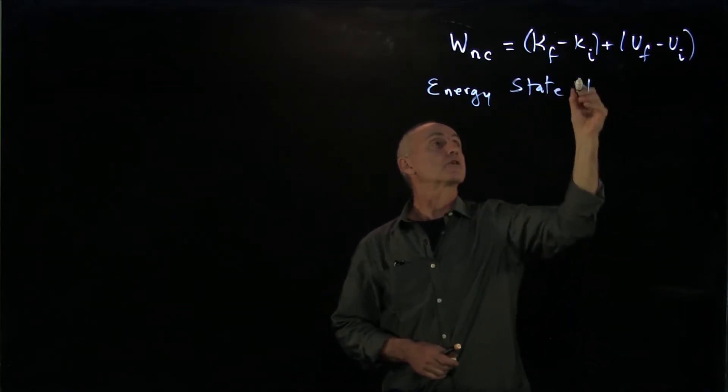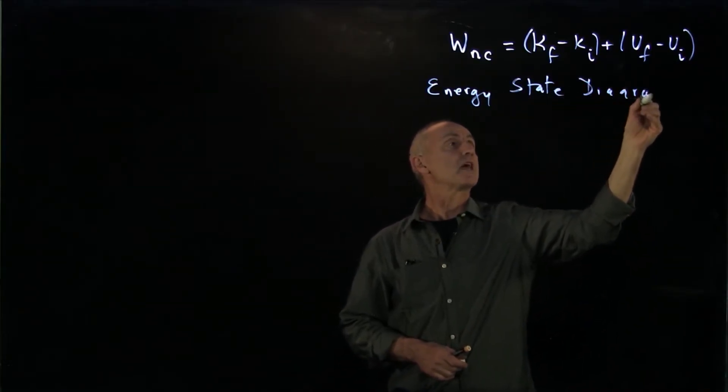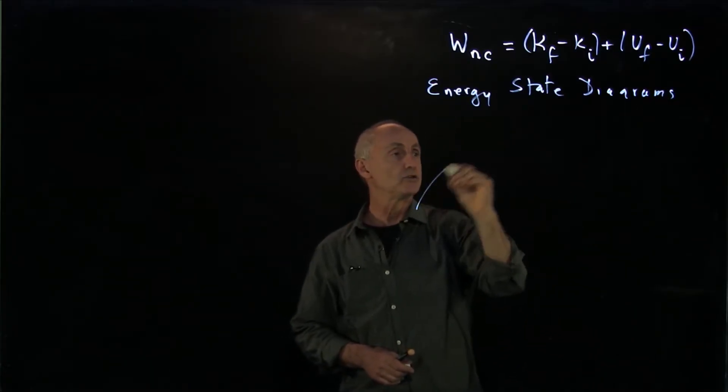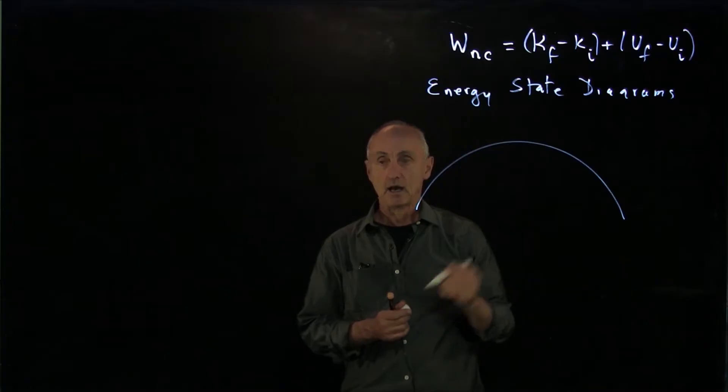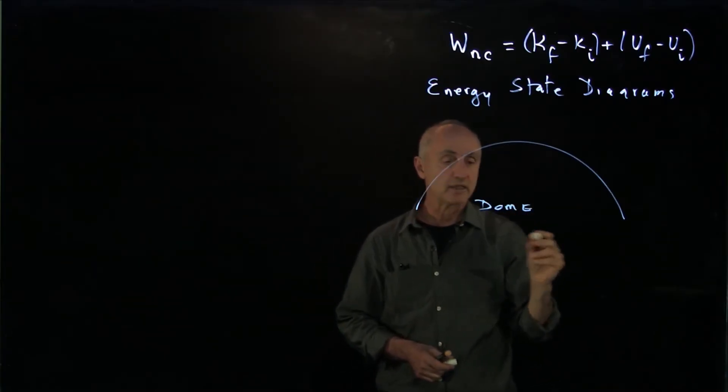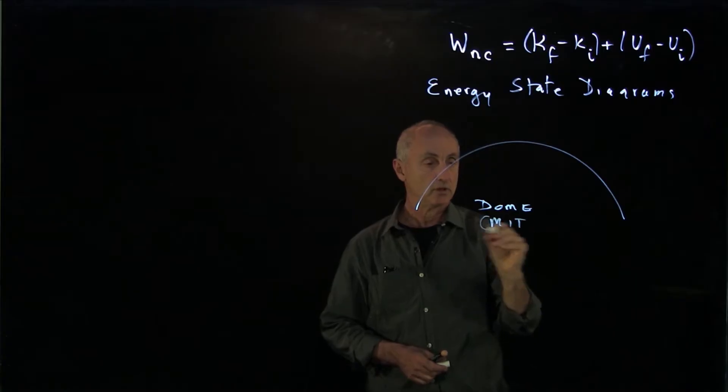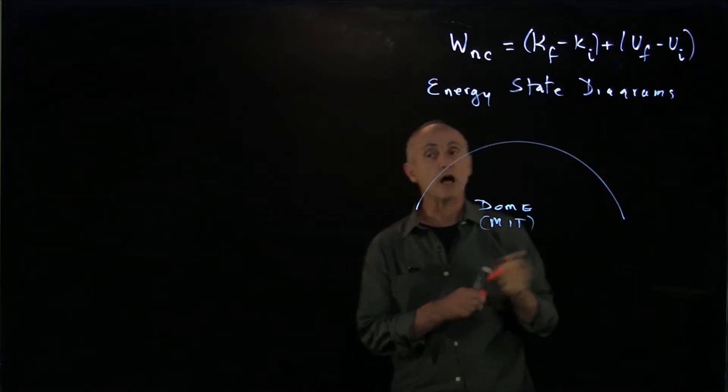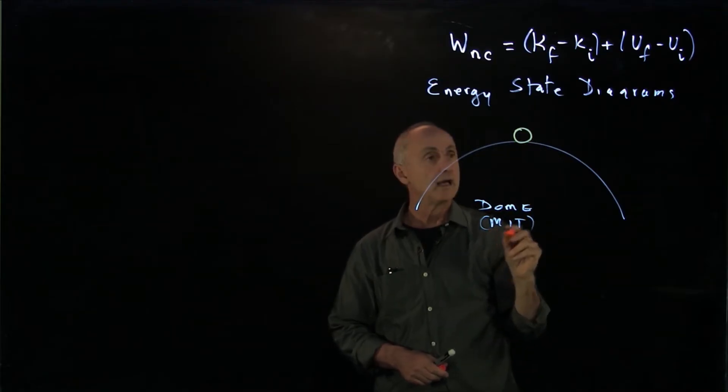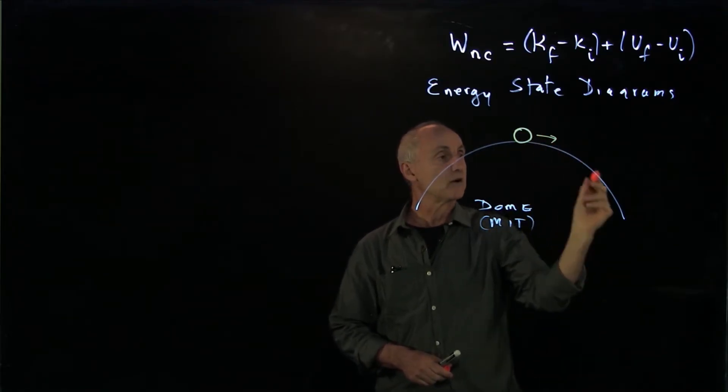So the way this works is, let's have an example to think about. Suppose you have a dome. So here's some dome. We can think of this as the MIT dome. And you have an object that is initially at the top of the dome. And then this object is sliding down the dome.